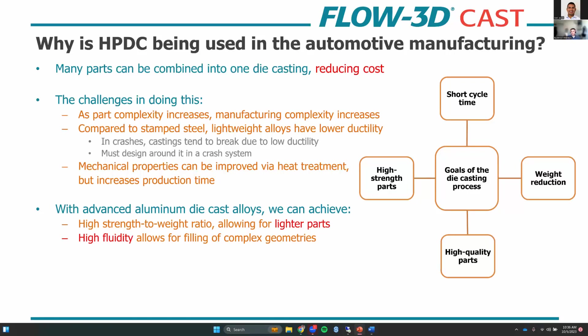Die casting and lightweight alloys are definitely not a new concept, with magnesium alloys dating back to around the early 20th century with Germany. But parts made with the die casting process historically have been limited to either smaller components or thick-walled pieces like wheels, engine blocks, and transmission cases. Larger structural parts for automotive have been made by assembling numerous steel stampings.